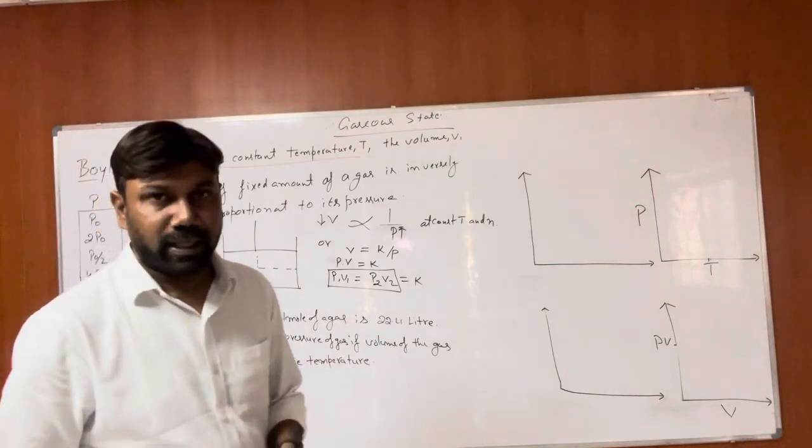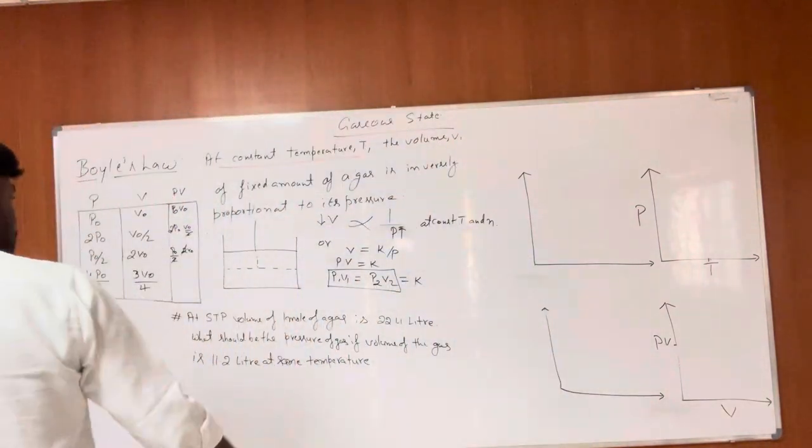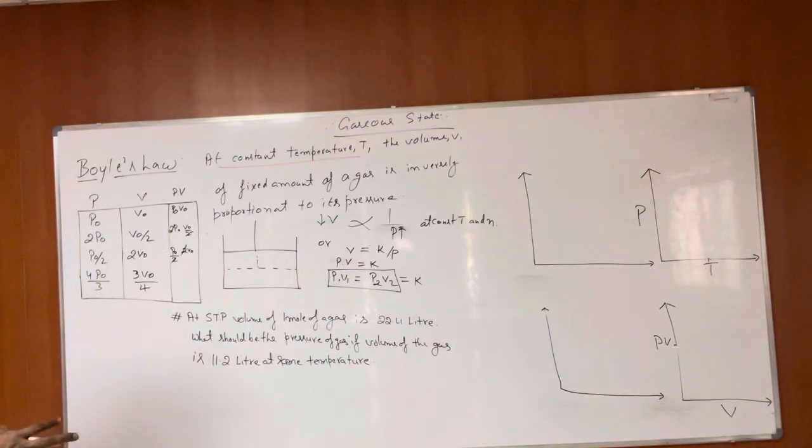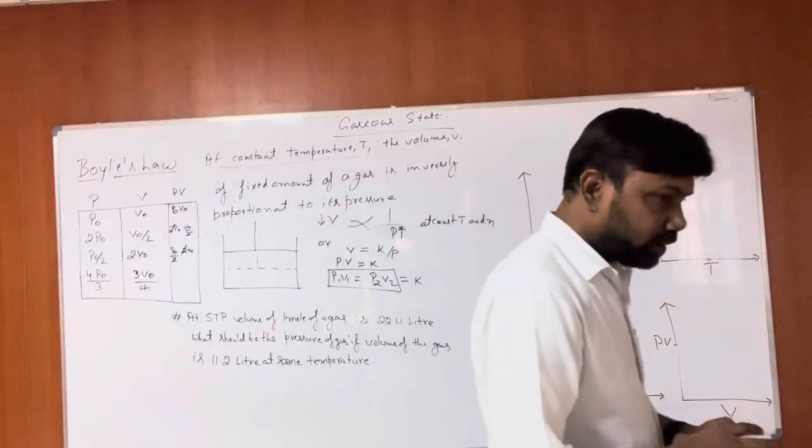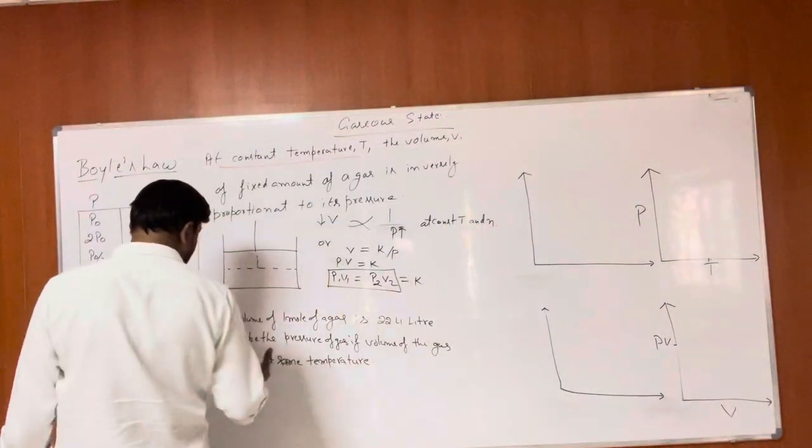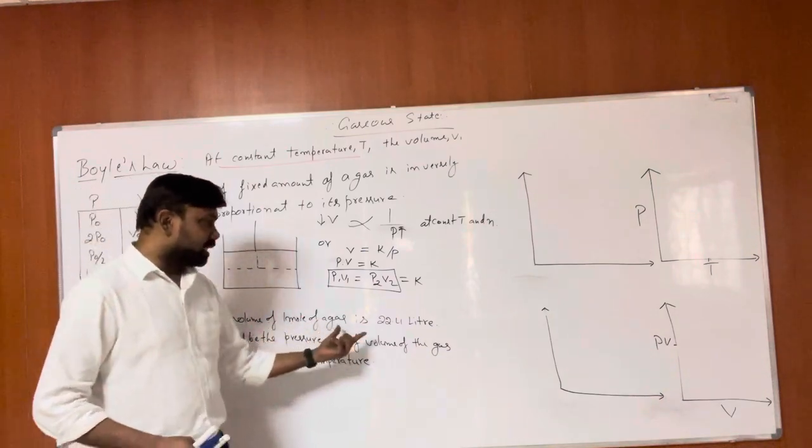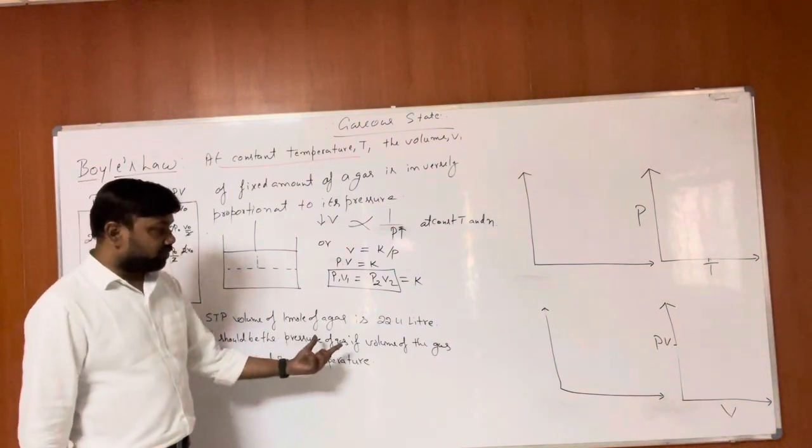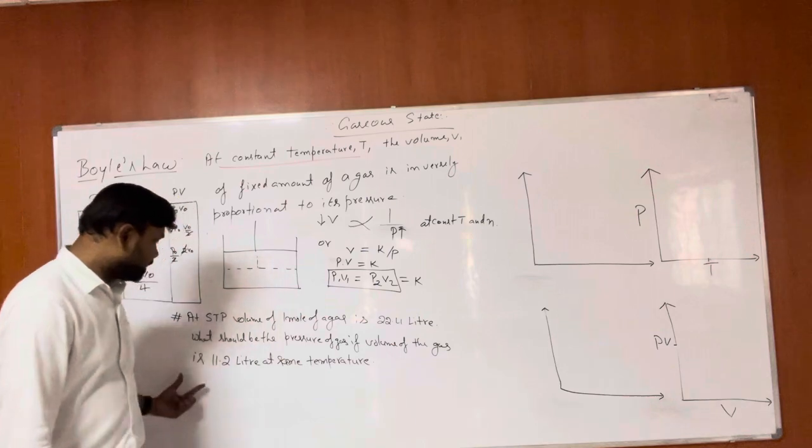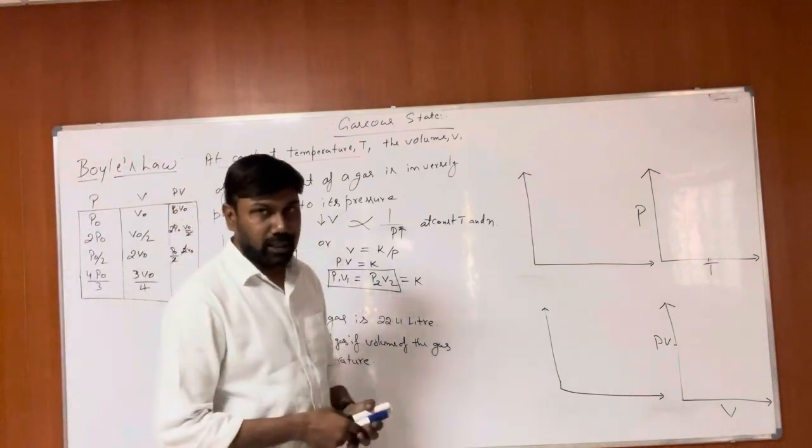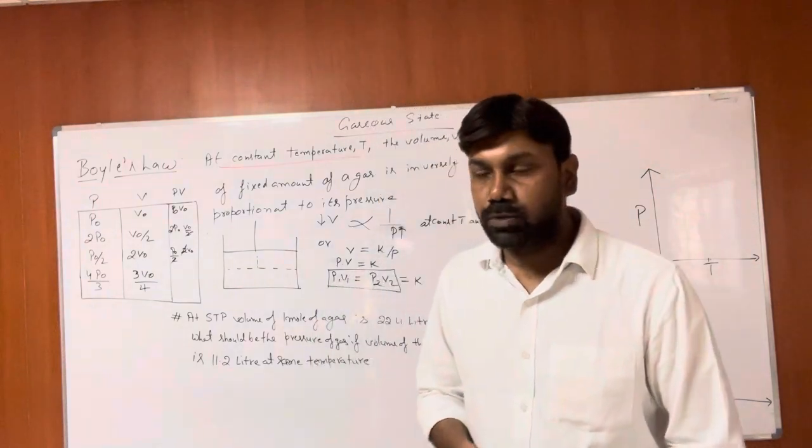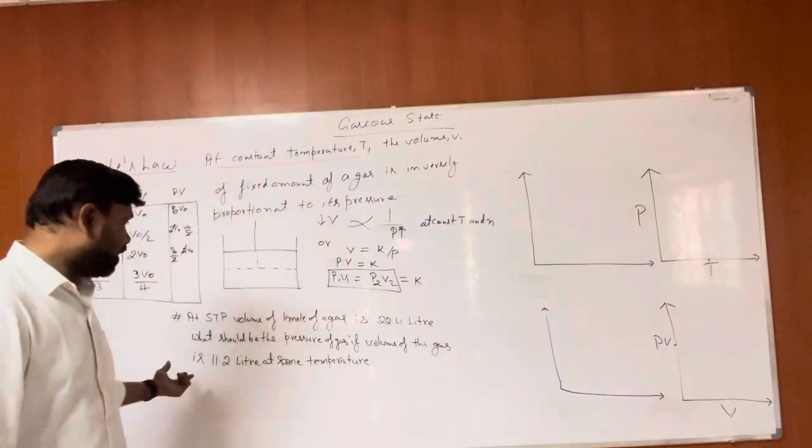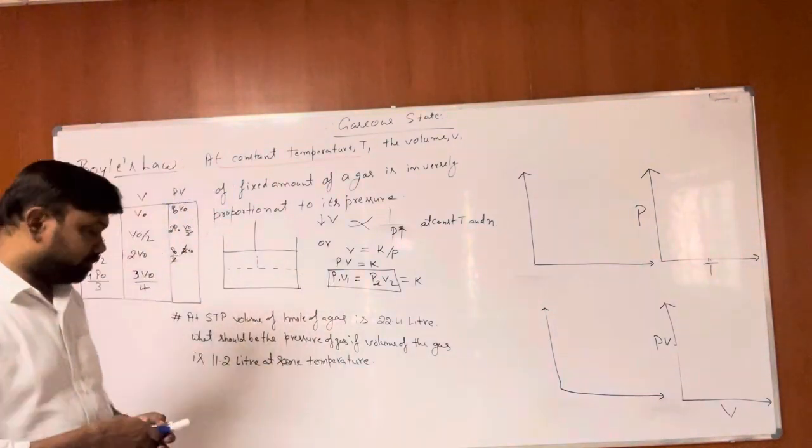This is the direct observation from equation PV equals constant. Let's solve a question: At STP, what should be the pressure of gas if volume of the gas is 11.2L at same temperature? At STP, one mole volume is 22.4L.